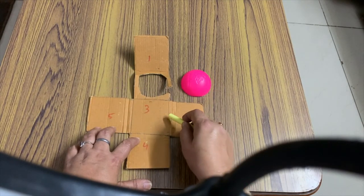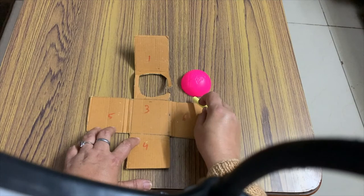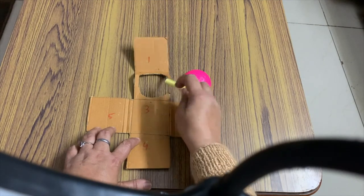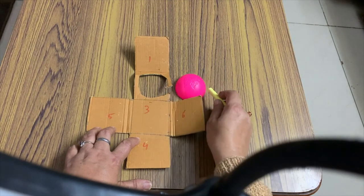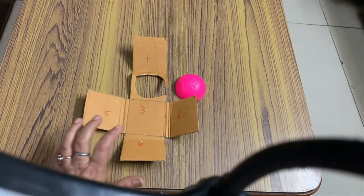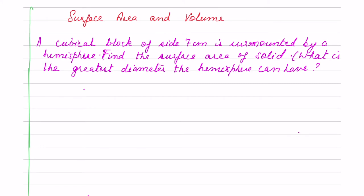So, that's why we subtract 6a² minus πr², but here hemisphere is taking its space. So, we are adding 2πr².